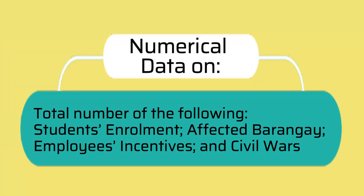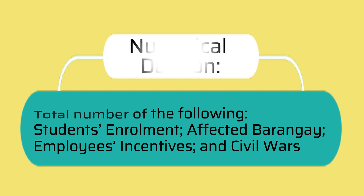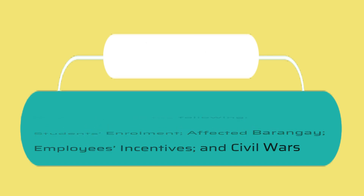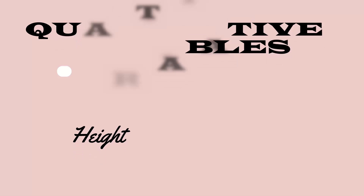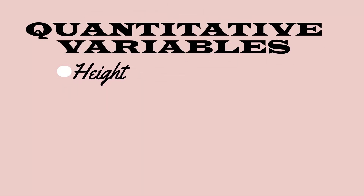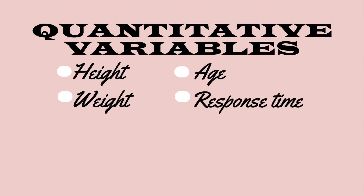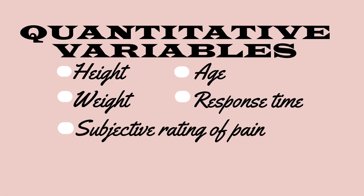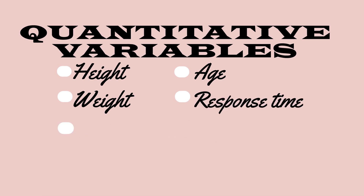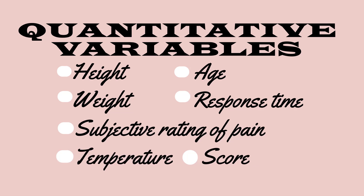For example, the total number of students' enrollment, affected barangay, employees' incentives, and civil wars. Here are some other examples of quantitative variables: height, weight, age, response time, subjective rating of pain, temperature, and score on an examination are all examples of quantitative variables because they all have numerical value.